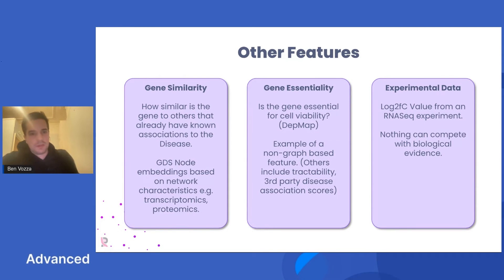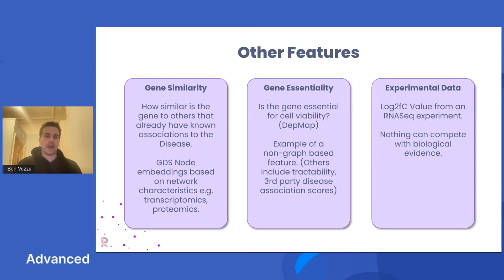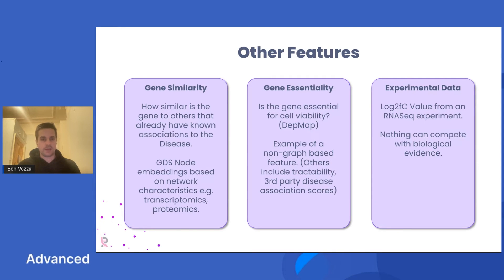Those are just a few graph-based features and quite simple examples, but there are many others a scientist may consider. For example, gene similarity: there are often genes with a well-known association to a disease, and you want to find similar genes as potential targets. Neo4j is a great way to do that because you can generate node embeddings of those genes, which represent a model of that gene within the network. Using the Graph Data Science library by Neo4j, you can create an embedding of gene X and gene Y, run cosine similarity between the two, and use that cosine similarity value as a feature.